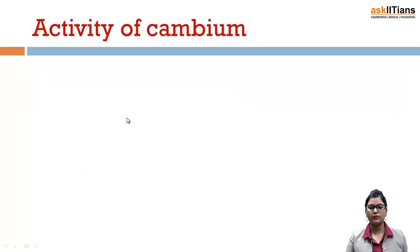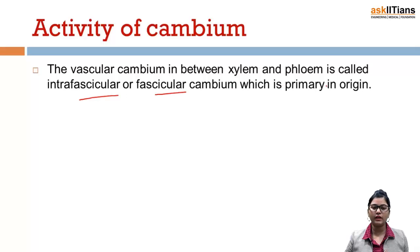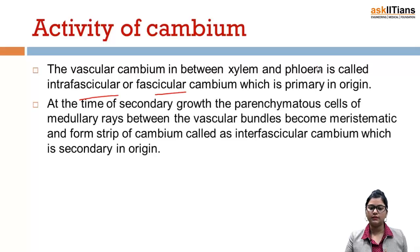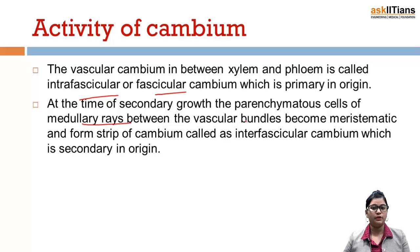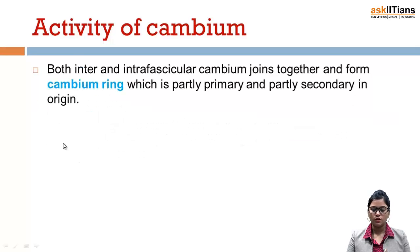The vascular cambium in between xylem and phloem is called the intrafascicular or fascicular cambium, which is primary in origin. At the time of secondary growth, parenchymatous cells of medullary rays between the vascular bundles become meristematic and form a strip of cambium called interfascicular cambium, which is secondary in origin.